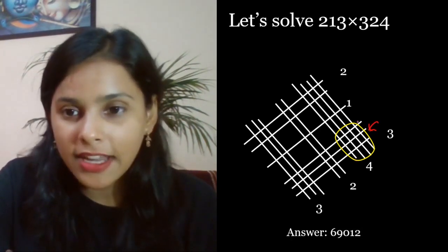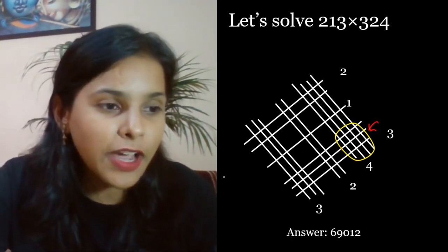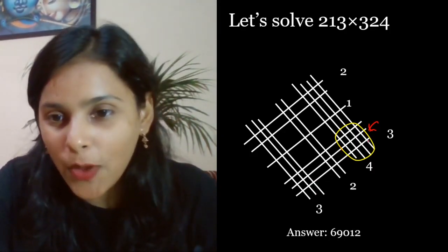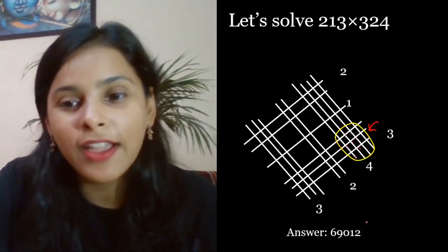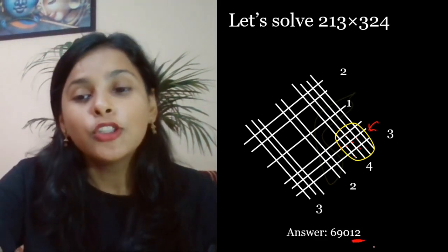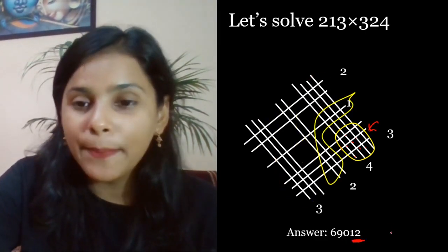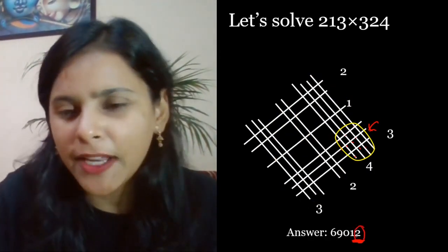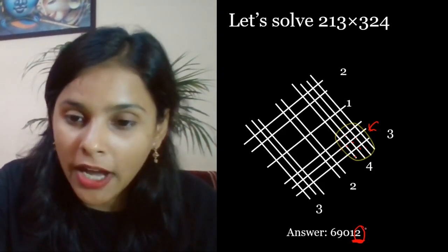What is the answer? How will it come? This is the intersection point. Let's count. 1, 2, 3, 4, 5, 6, 7, 8, 9, 10, 11, 12. This is the answer 12. So what will you do in the answer? You will write this 2 and you will move on to the 1 and carry forward the 1. Let's do the work, the answer you have come to.